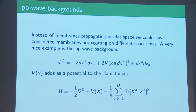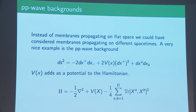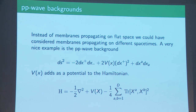One can consider membranes embedded not just in flat space but in other backgrounds. An interesting family of backgrounds which preserves essentially all of the described properties is what I call pp-wave backgrounds — parallel propagation waves. In a given spacetime, this deforms the metric by a potential V along one of the light-cone directions x+. Going through exactly the same procedure and pulling back this metric onto the space, one induces a potential into the Hamiltonian of the system, allowing one to deform it in rather nice ways.